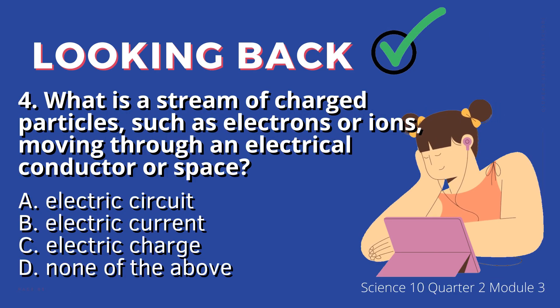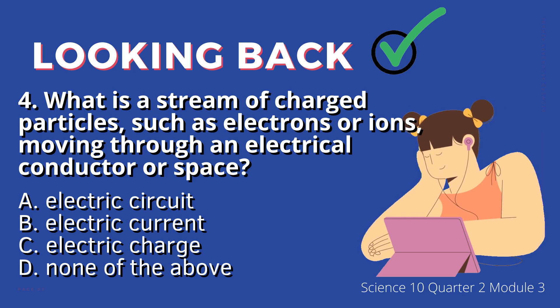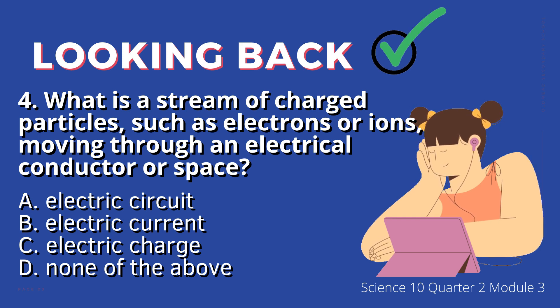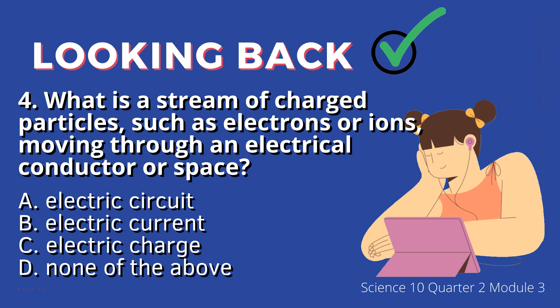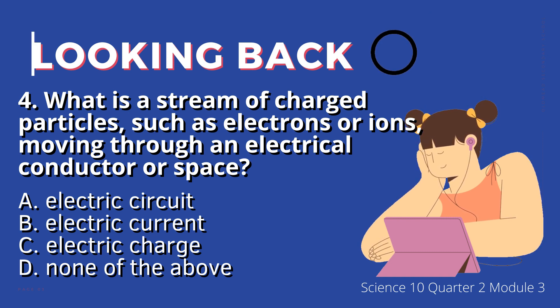4. What is a stream of charged particles such as electrons or ions moving through an electrical conductor or space? A. Electric circuit, B. Electric current, C. Electric charge, D. None of the above.